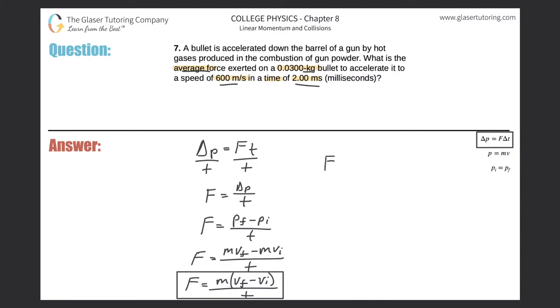So here the force is the mass of the object, 0.03, multiplied by the final velocity of 600 meters per second minus the initial of zero, divided then by the time it took. Now this is in milliseconds, so simply all we're going to do is just move the decimal three places to the left. So it's going to be basically 0.002 seconds.